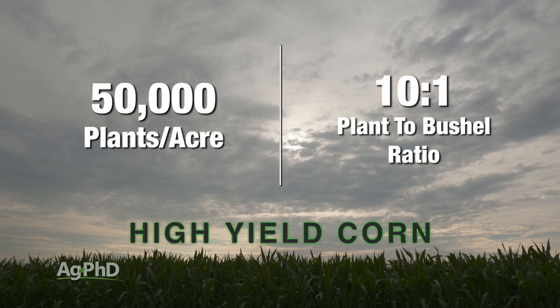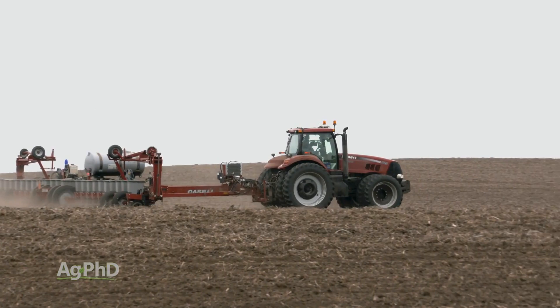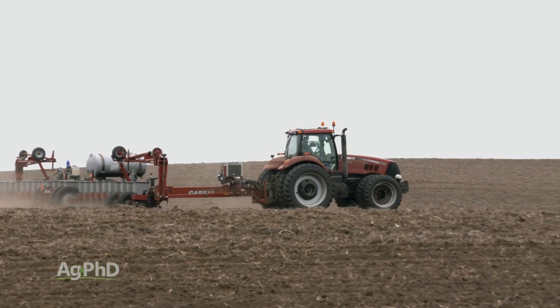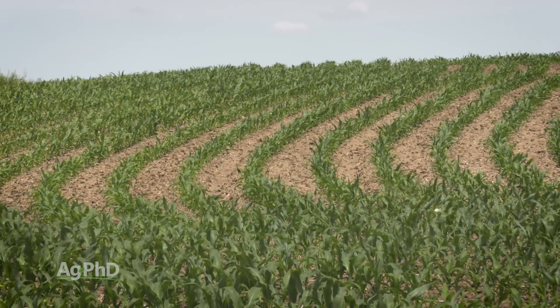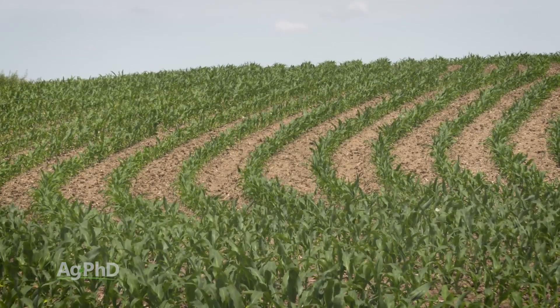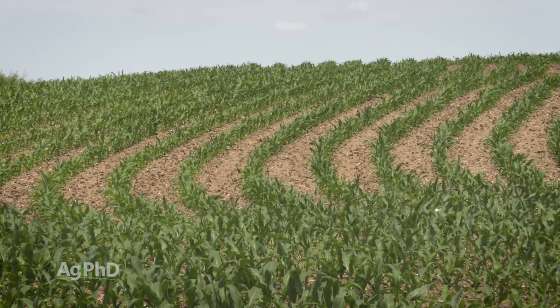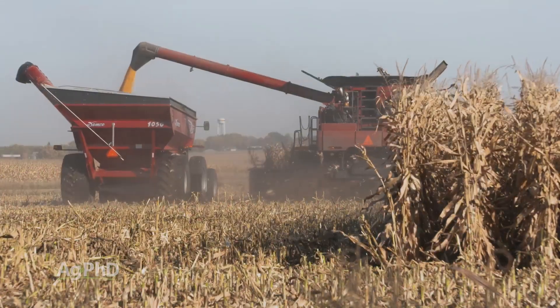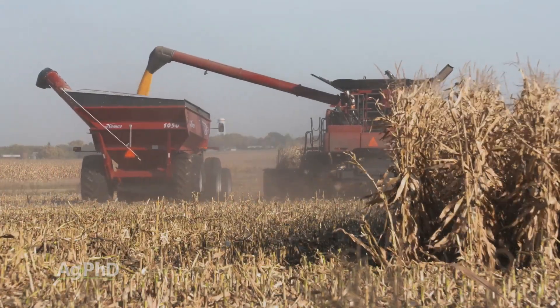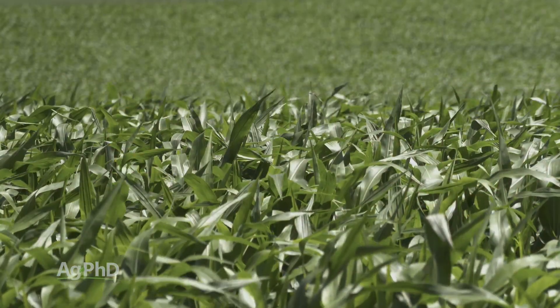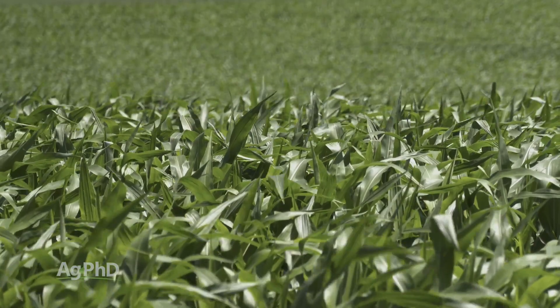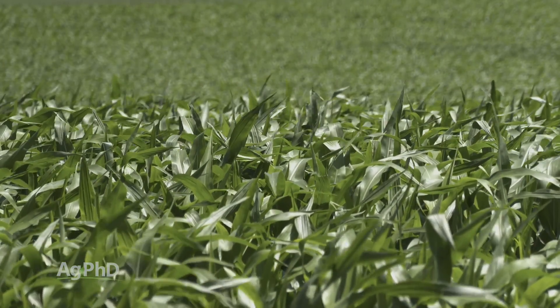Let's convert that to my farm. If I'm planting 30,000 plants per acre, 30 times 10 is 300 — I should be averaging 300. How come I'm only averaging 200? There are a lot of reasons for that, but certainly we're not reaching the genetic potential of that corn. I talk to guys all the time who are getting 200 bushel corn and think they should bump population up to 40,000 — and many times when that happens we have disasters in the field.